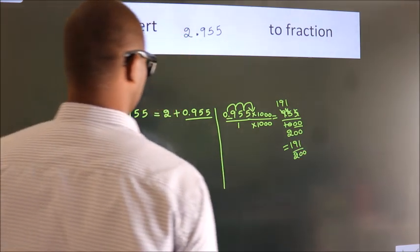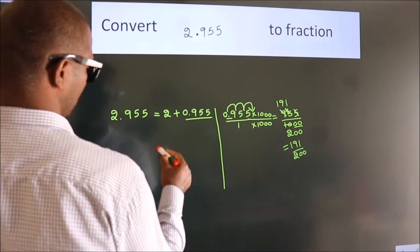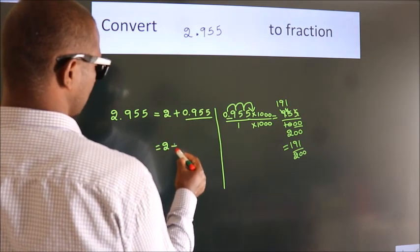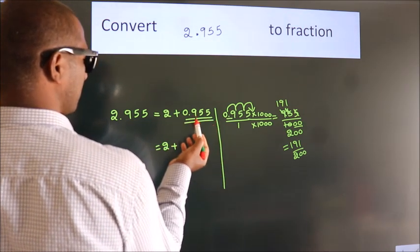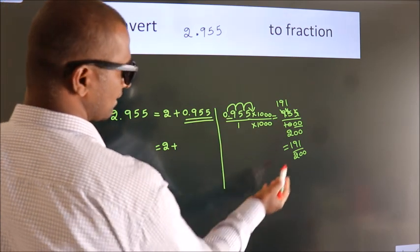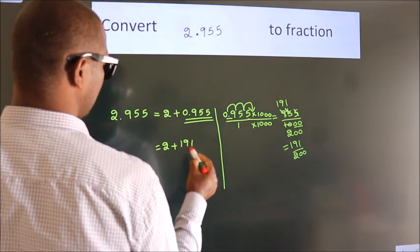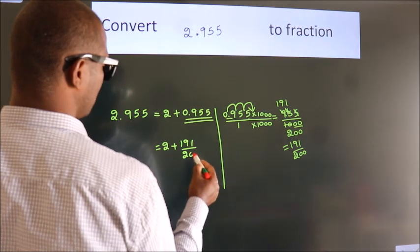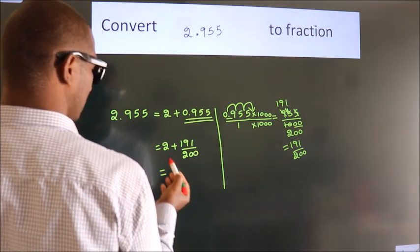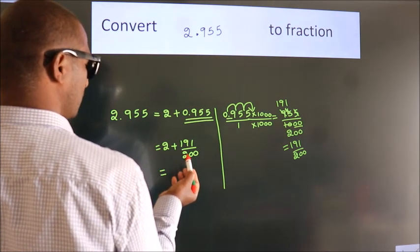Now here, 2 plus, in place of 0.955, now we write this fraction 191 by 200. So 2 plus 191 by 200.